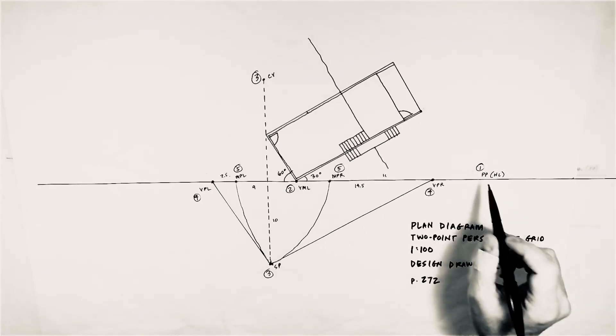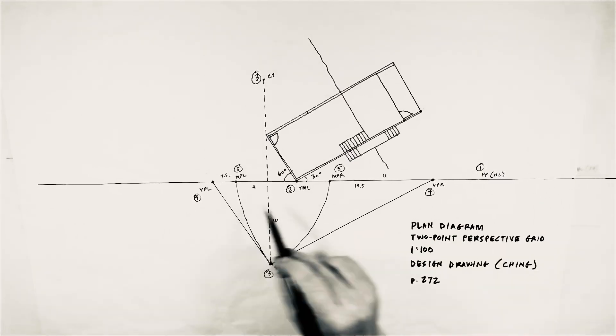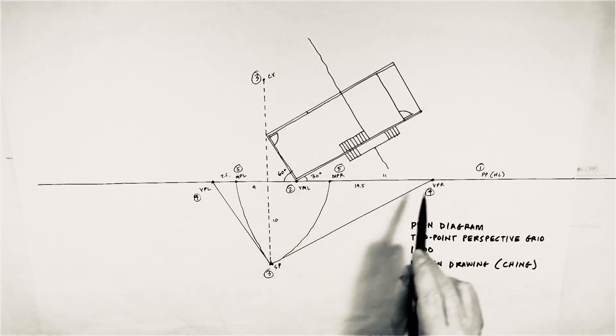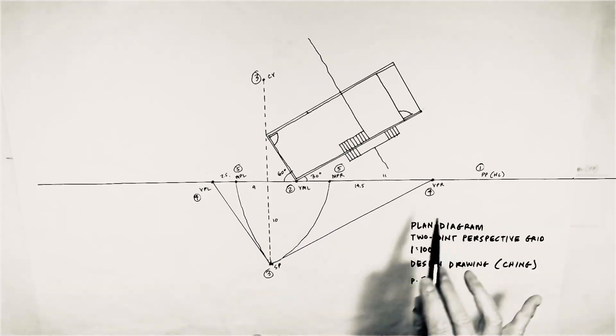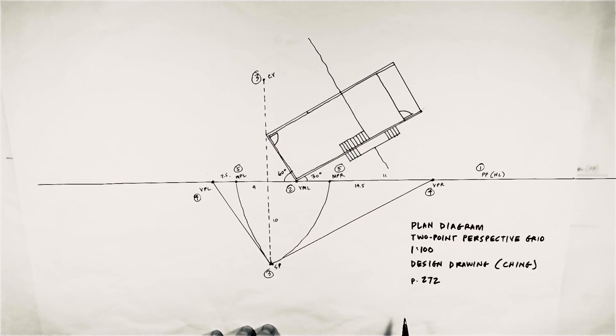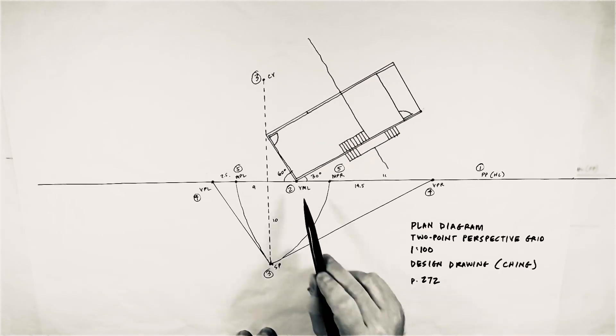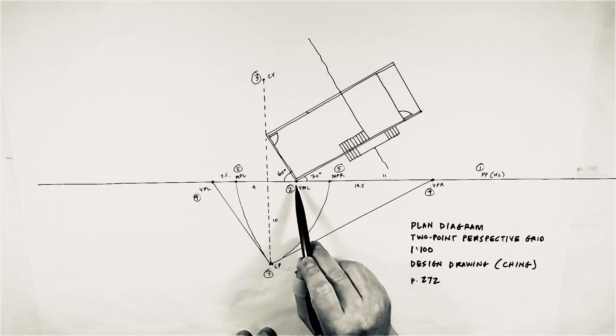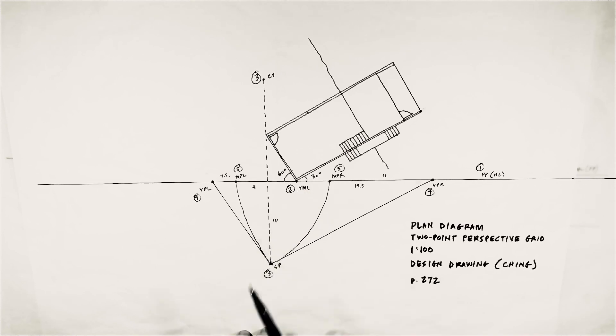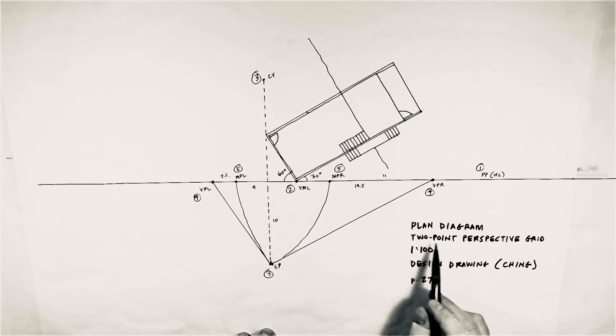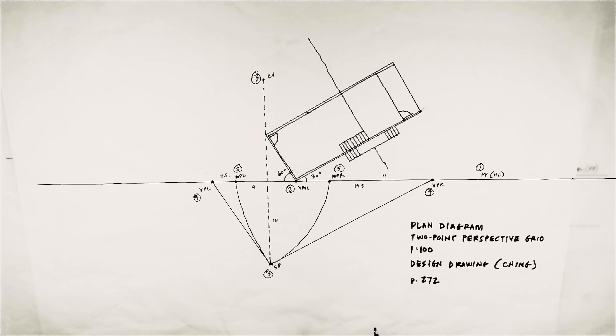Okay, so first thing I want to do is draw this picture plane, which will become the horizon line. All these points will be measured on the horizon line in the same way they are measured on this picture plane. Number two, we set the point at which we want the vertical measuring line to exist on that picture plane. Again, we're doing this right now, 1 to 100. We'll translate it to the perspective at 1 to 50.